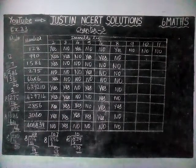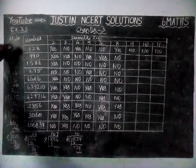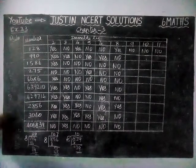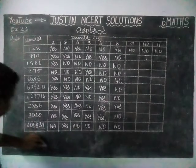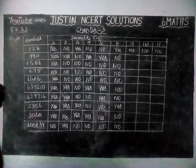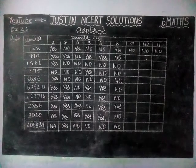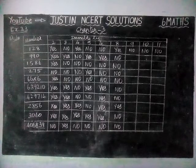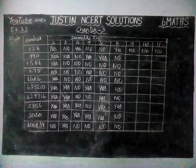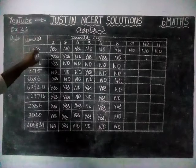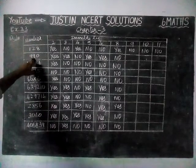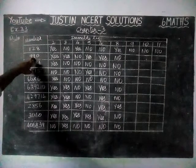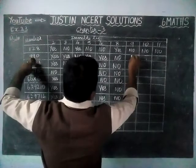Next we are going to check for divisibility by 9. The rule is: if the sum of its digits is divisible by 9, that number is divisible by 9. Now checking: 9 plus 9 is 18 — 18 is divisible by 9 — therefore this number is divisible by 9, yes.